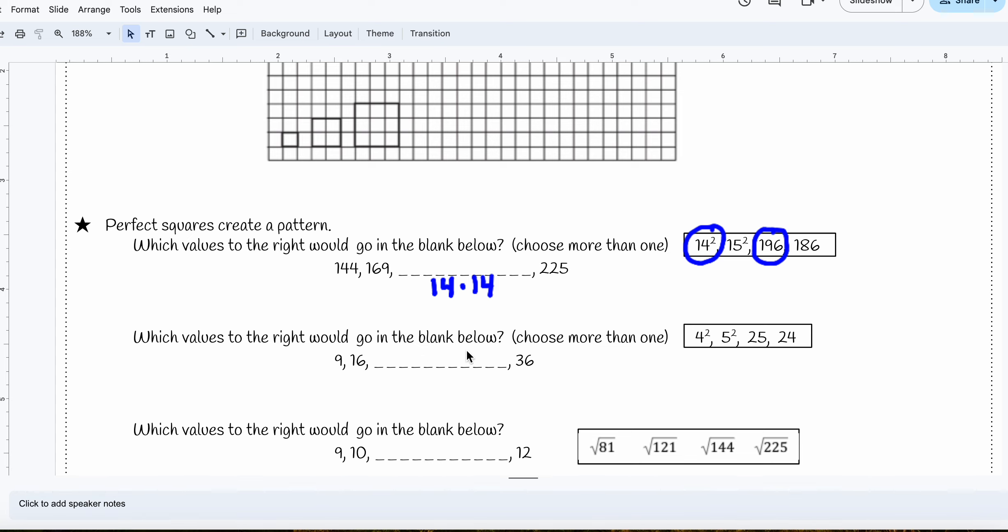Which values to the right would go in the blank? I notice I have perfect squares. I have nine, which is the result of three times three, 16, which is four times four. So the next one would have to be 25, because I know six times six is 36. So I'm looking for something that equals 25, which is five squared, and I would see 25 right there.